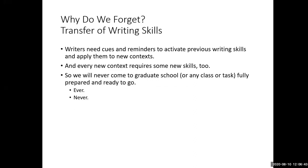Why do we forget these things? Researchers in writing and rhetoric who study the transfer of writing skills look at what people transfer from one task to another, or from learning in one class to another. What they've found is that writers need cues and reminders to activate previous writing knowledge and apply it to new contexts. They've also found that every new context requires some new skills, so we are never coming to graduate school — or any task or class — fully prepared and ready to go. But there are actually a lot of things we can do to be successful writers in graduate school.